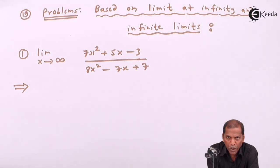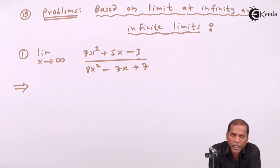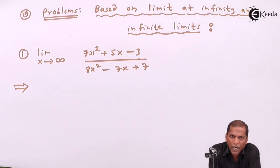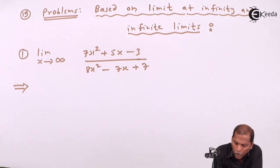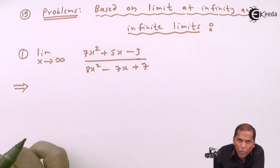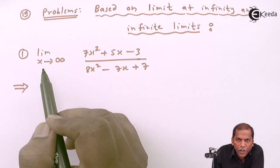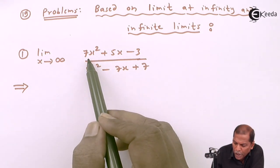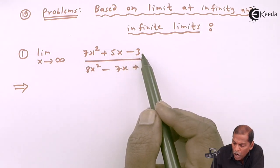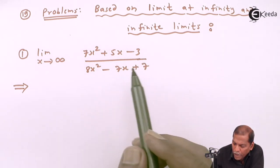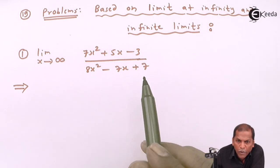Hello friends. Now we see subtopic 19, which includes problems based on limits at infinity and infinite limits. From chapter Limits, we see problem number one: the limit as x tends to infinity of 7x squared plus 5x minus 3 upon 8x squared minus 7x plus 7.